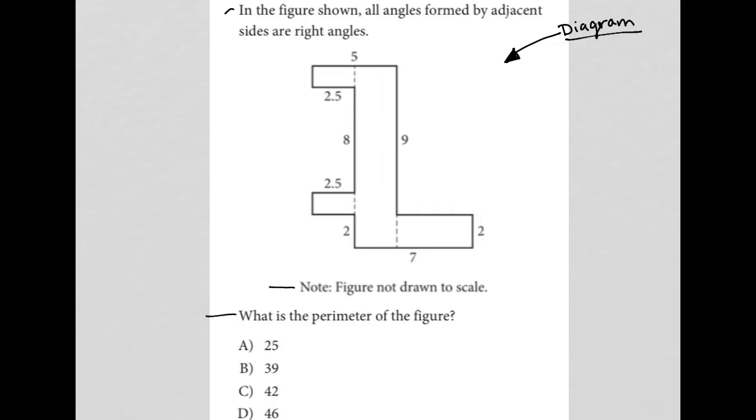I'm going to spot the side lengths I don't have. I'm going to call this side A, I don't have that. I'm going to call this B, this is C, and this is D. Although I do see that I actually know what D is, because this is just the same as that. So this is also 2.5. I'll just label that as 2.5. So I just have A, B, and C missing.